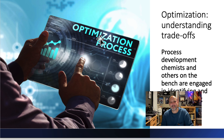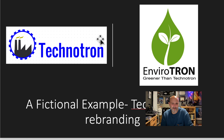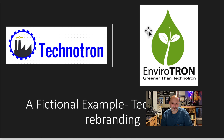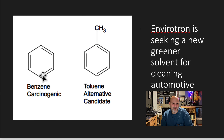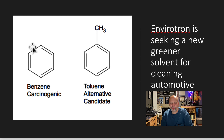Here's an example. I have two fake companies — Technotron wants to change its name to Envirotron. They want to take benzene, which is a carcinogenic chemical, and substitute it with toluene, which is a lot safer. So they want a greener solvent. They just try it — they replace benzene with toluene in their cleaning process for automotive parts.